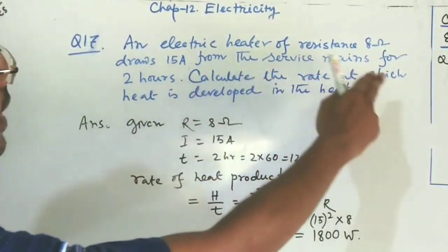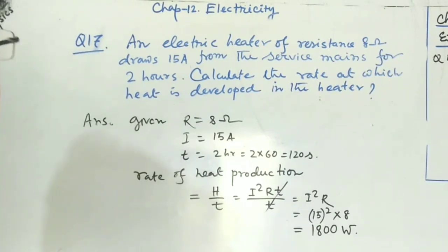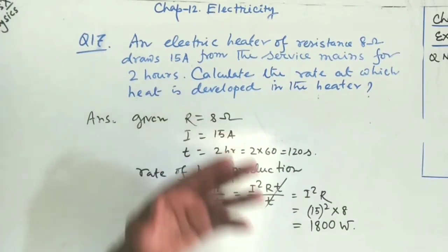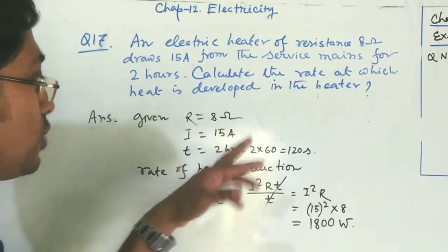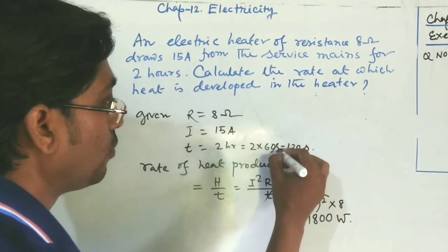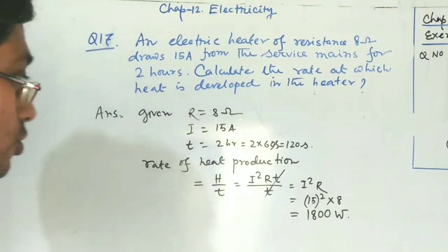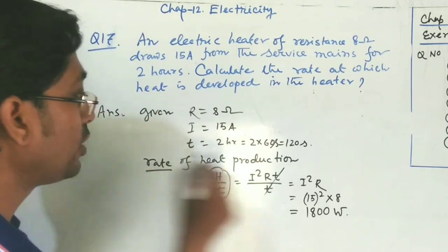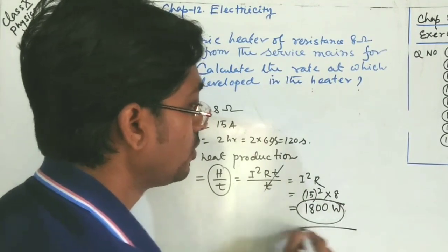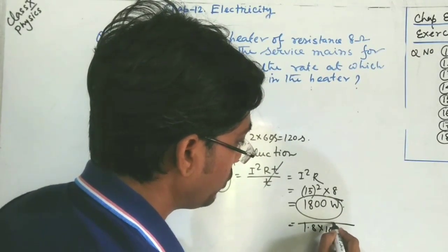Question 17: An electric heater of resistance 8 ohm draws 15 ampere for two hours. Find the rate at which heat is developed. Rate of heat production = H/t = I²R = 15² × 8 = 225 × 8 = 1800 watt, which is 1.8 × 10³ watt or 1.8 kilowatt.